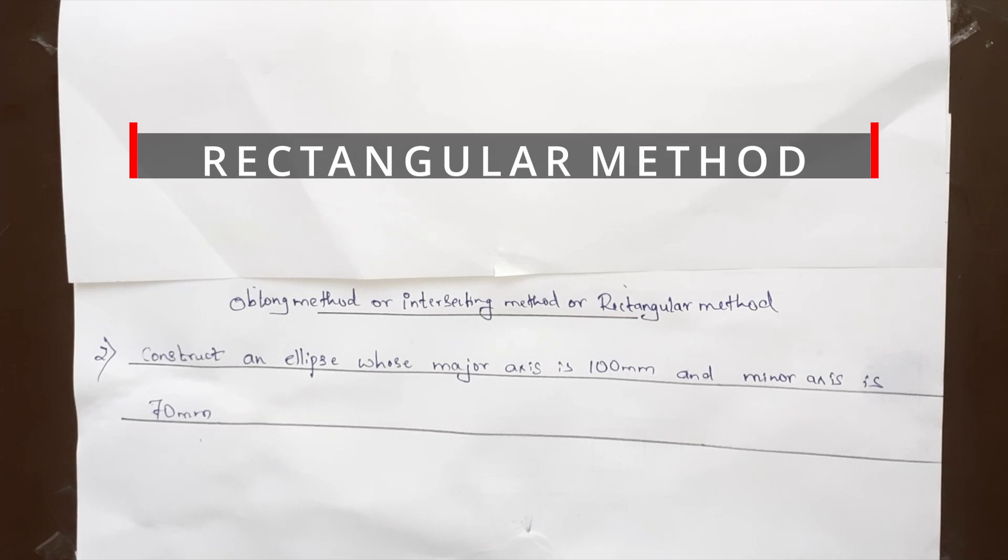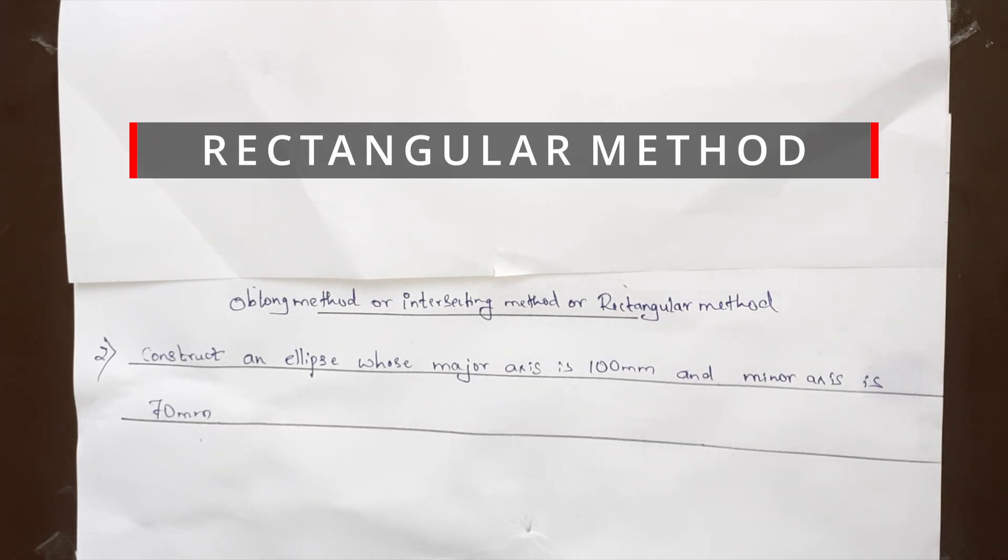Now let's draw the ellipse by rectangular method. First let's draw a rectangle of 100 mm into 70 mm.